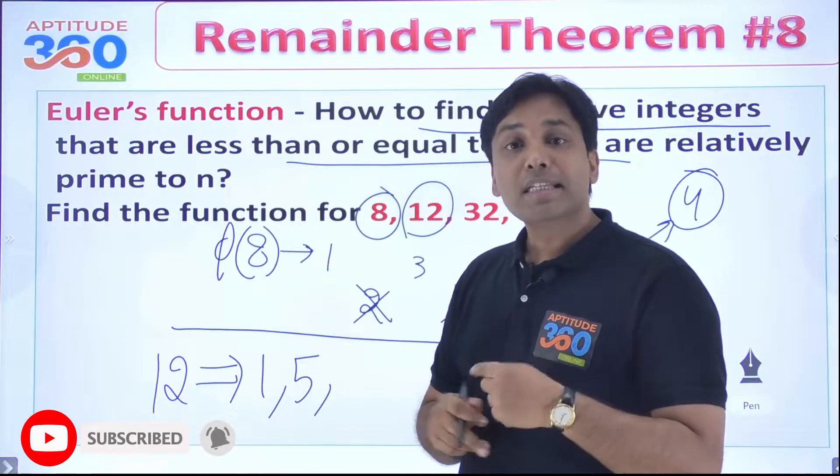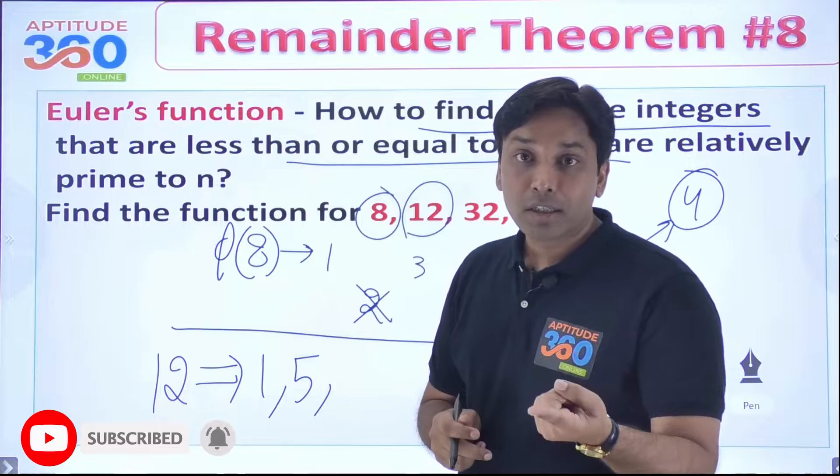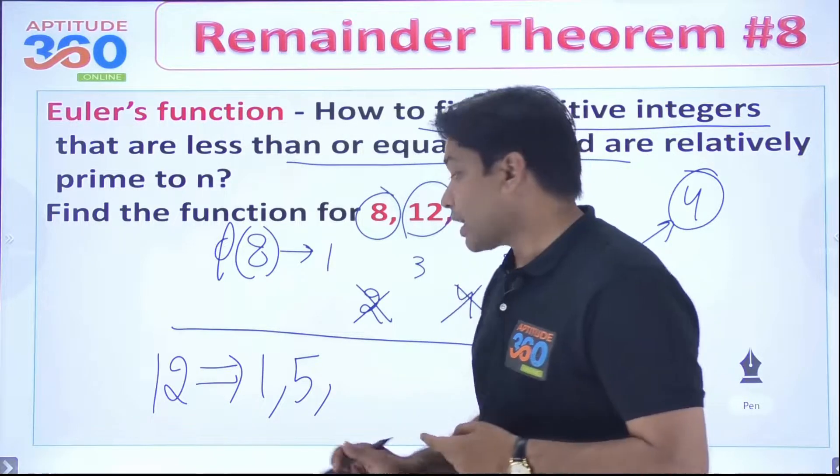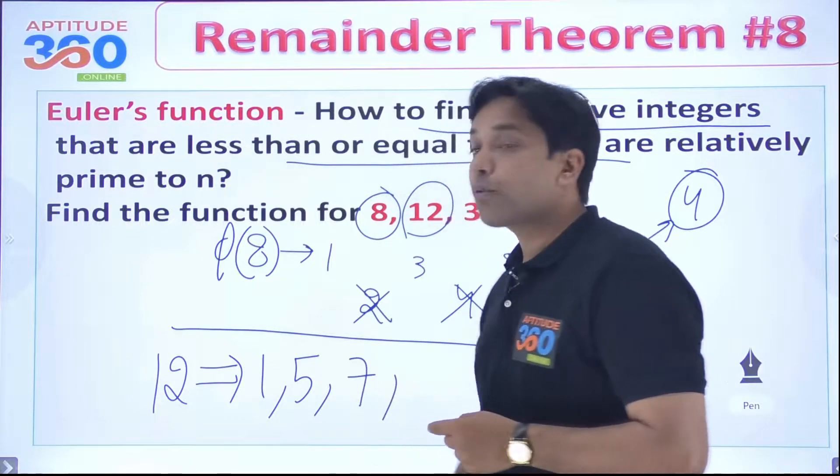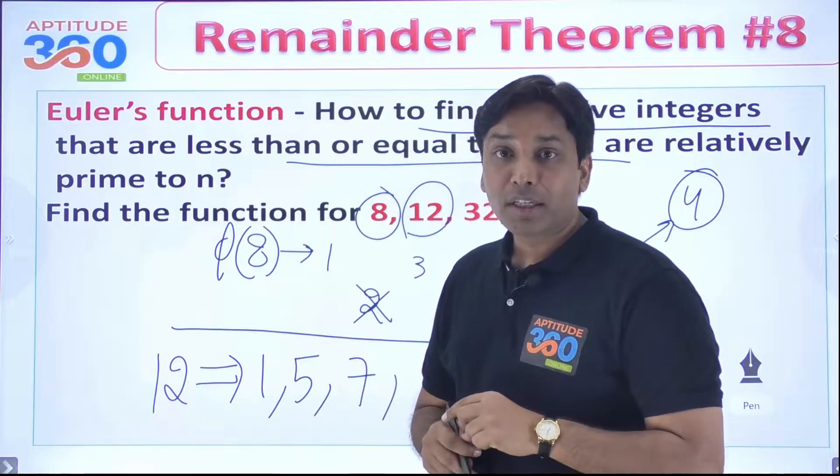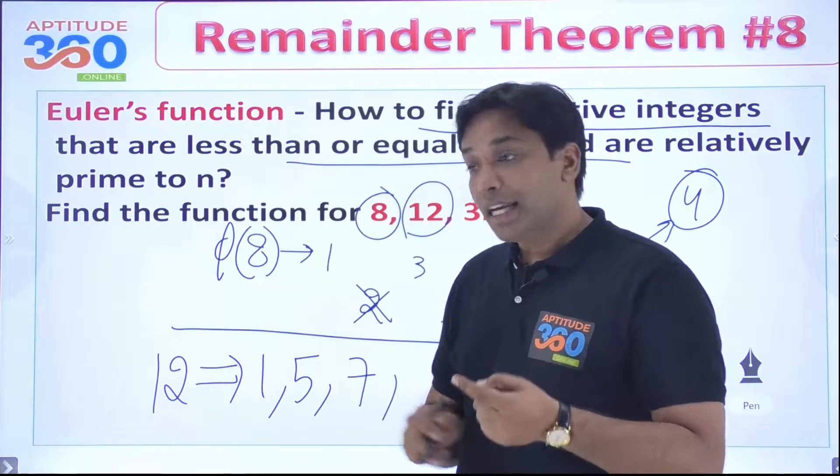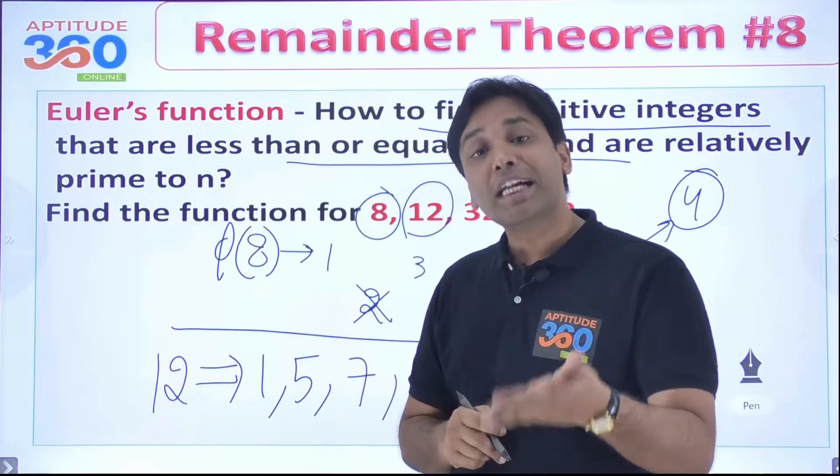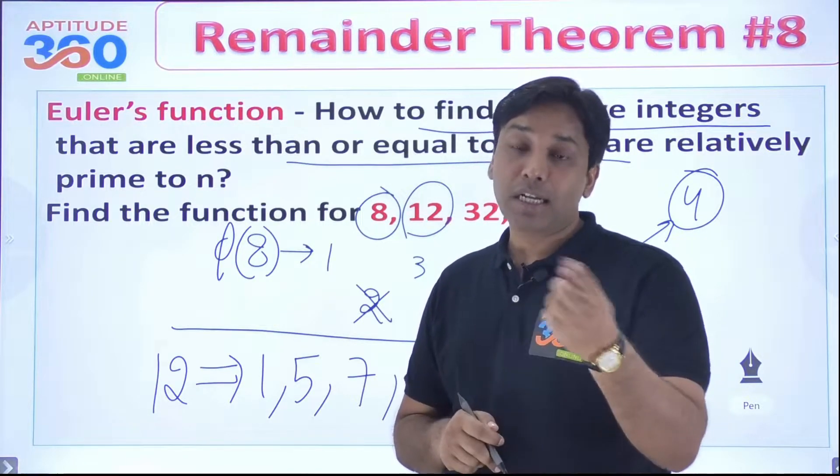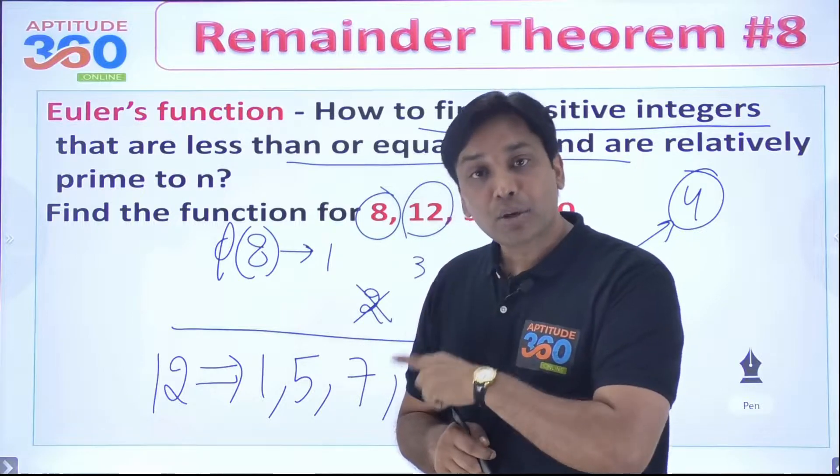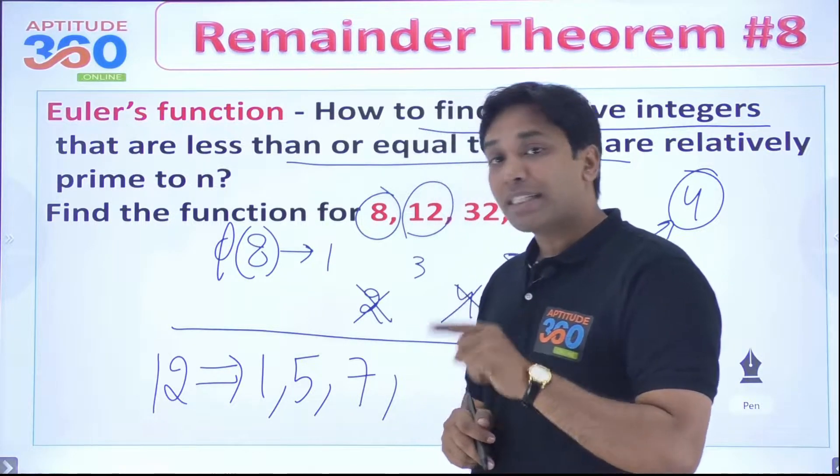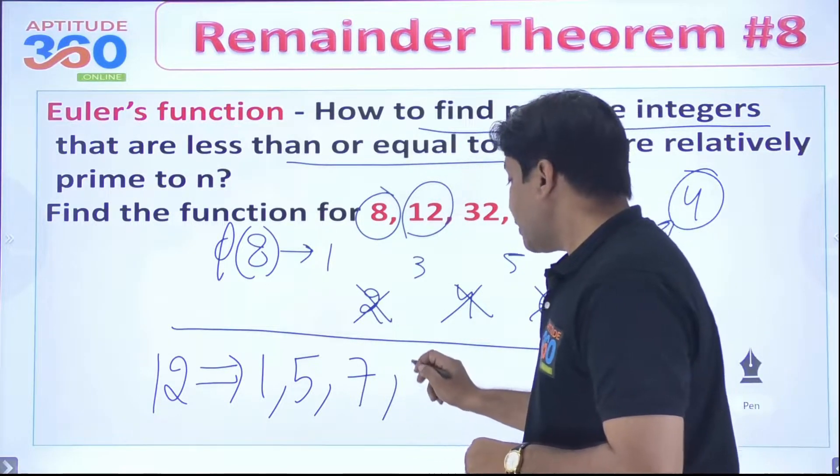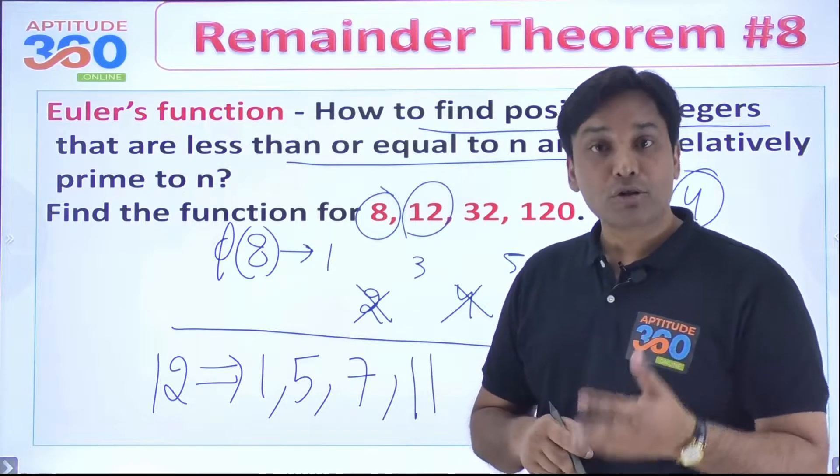After 5, I guess 6. 6 and 12, 6 into 2 is 12, so that cannot be. After that, you have got 7. 7 and 12, they don't have any factor in common. Then 8 and 12, they are not coprime to each other. And then 9 and 12 is not also possibility. You understand? 3 into 3 is 9, and 3 into 4 is 12. 10 cannot be there. 11 can be there. Yes, 11 can be there. 12 cannot be there.